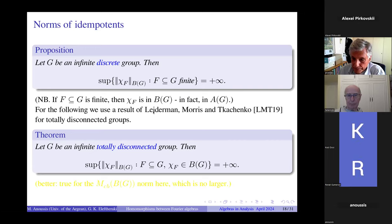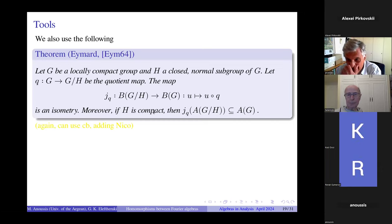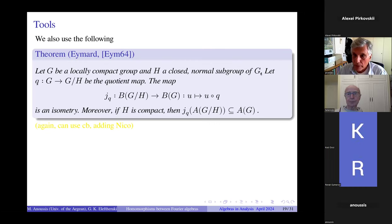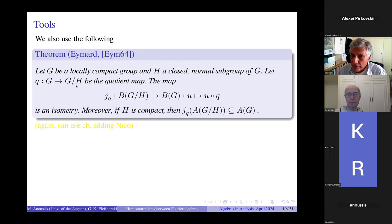Our first result: if G is an infinite discrete group, then one can find idempotents in B of G of arbitrarily large norm. Notice that in a discrete group any finite set gives a characteristic function in the Fourier-Stieltjes algebra — in fact in the Fourier algebra. To move from discrete groups to more complicated ones, we use a result of Leiderman, Morris, and Kachenko from 2019.